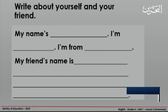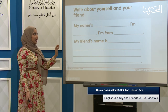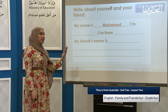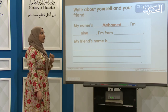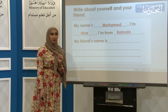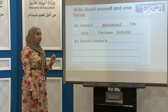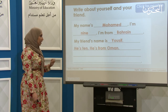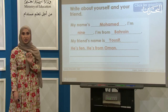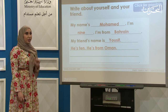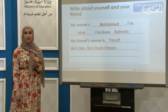Now it's time for you to write about yourself and your friend. Let's see the example. My name's Mohammed. I'm 9. I'm from the Kingdom of Bahrain. Now your friend: my friend's name is Yusuf. He's 10. He's from Oman. This was an example. Now it's your turn to write about yourself and your friend. Remember: write your name, how old you are, and where you are from. Write the same for your friend.